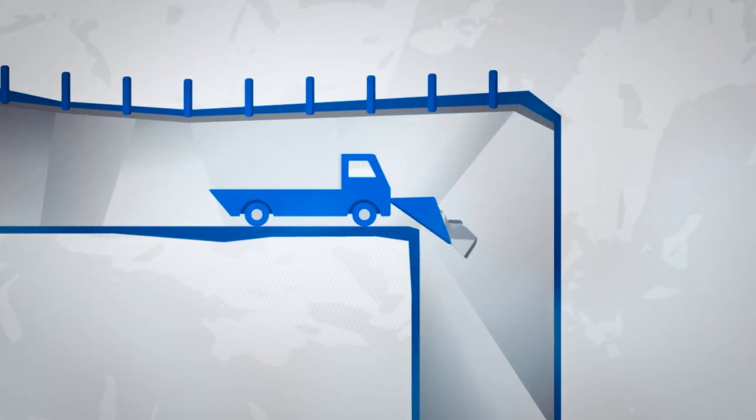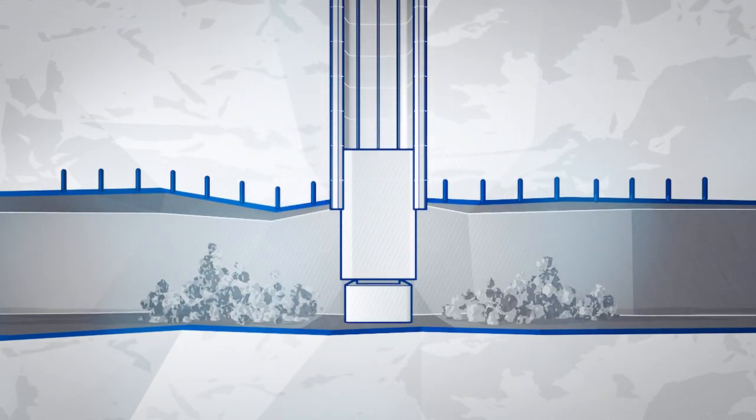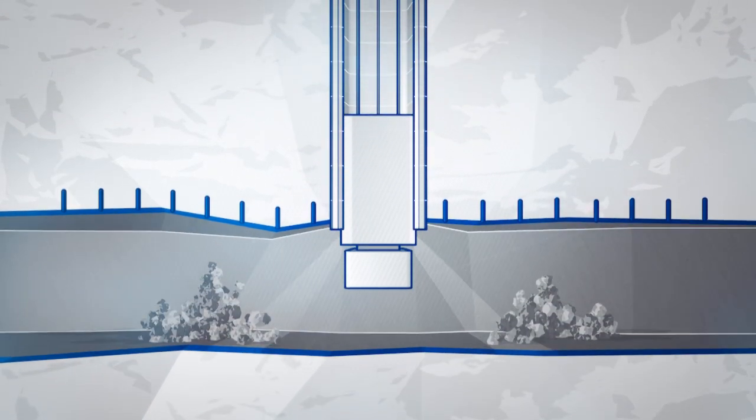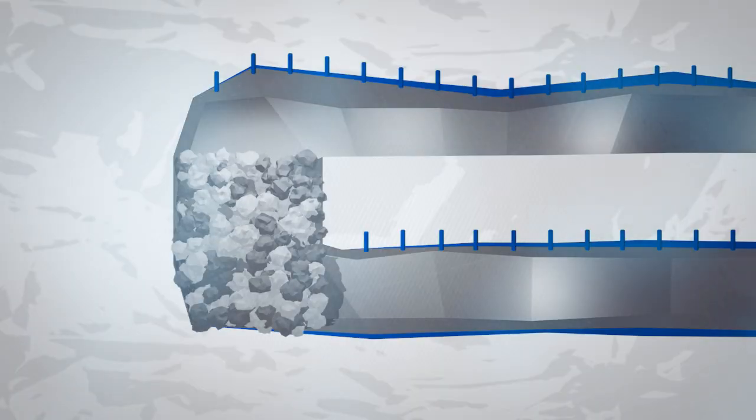Ore is loaded from the stopes and fed to the crusher at the base of the mine. The crushed ore is hoisted to the surface via a 600 meter deep shaft. Open stopes are then backfilled with barren rock and mining continues upwards.